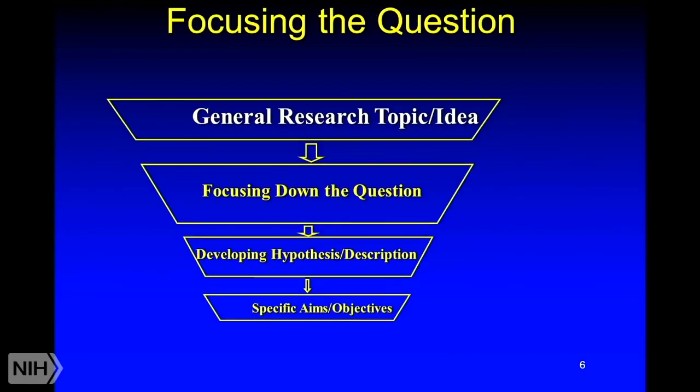If you're going to come up with a research question, here is a general way to think about it — four steps. One is to come up with a general research topic or idea, but those ideas are usually very broad and you need to focus them down. Once you focus the question, you need to come up with a specific hypothesis or description of what you are actually going to analyze. And then, to come up with specific aims and objectives. These ideas come from real-life experiences encountered in clinical practice, and these are exactly the kinds of questions that patients ask all the time.